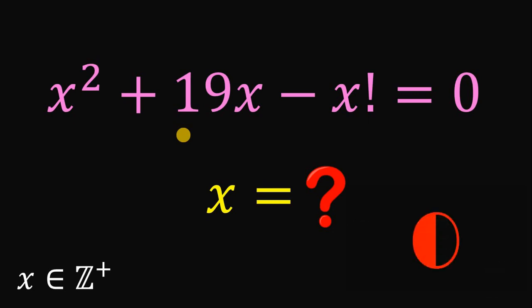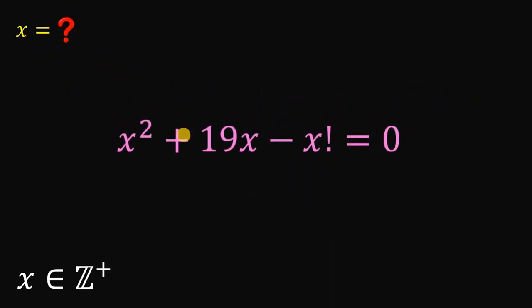And now, let's answer this unusual equation. Our goal in this question is to solve for the value of x which is a positive integer given this equation x squared plus 19x minus x factorial equals 0. So, how do we start?